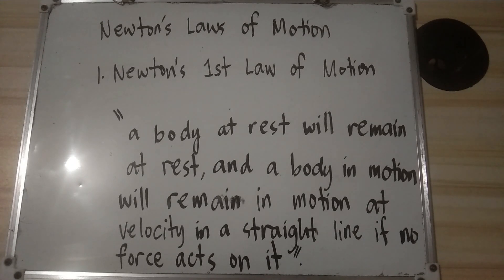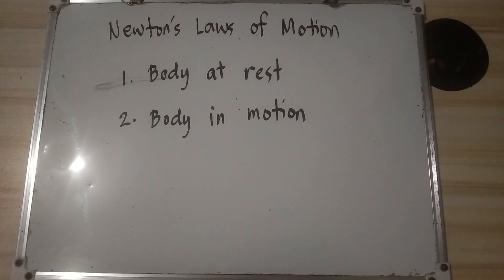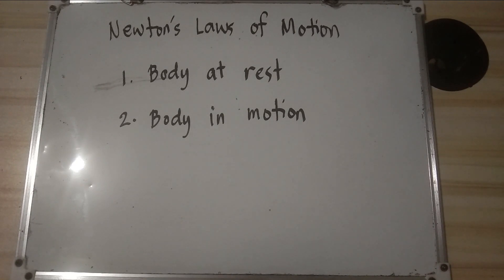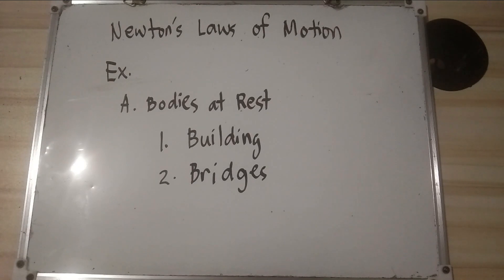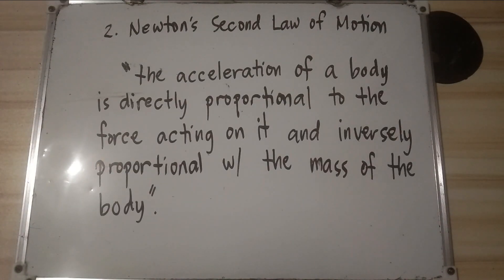This statement indicates two situations: body at rest and body in motion. Inertia is the property of an object that requires application of force to change the object's motion. For a body at rest, it means the body will stay at rest unless a force is applied to move it. For a body in motion, it means the body will move continuously unless a force is applied to stop it. Examples of bodies at rest include buildings and bridges, while bodies in motion include the planetary system, satellites, and a rolling ball.